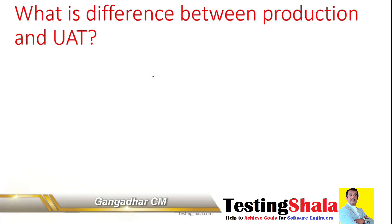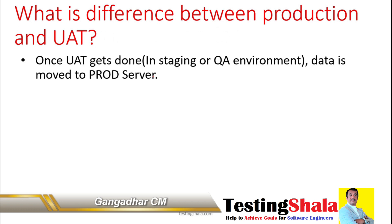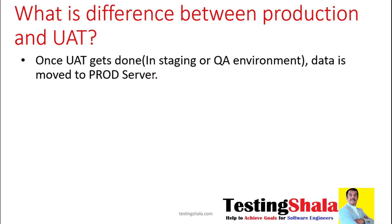What is the key difference between a production and a UAT environment? UAT is performed in a staging environment, similar to the production environment, or a QA environment. But the production environment is a totally different environment where the product is actually going to go live.